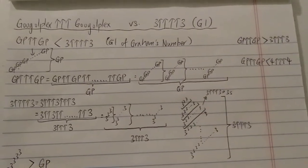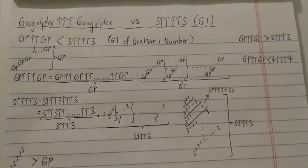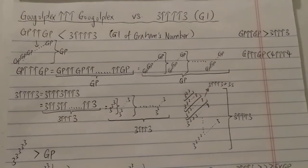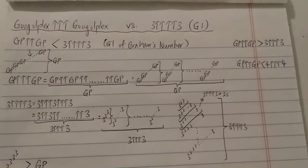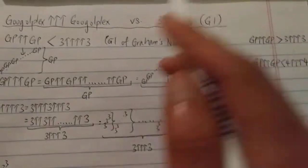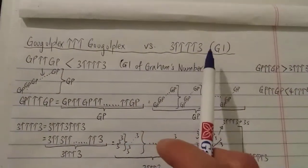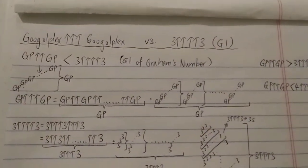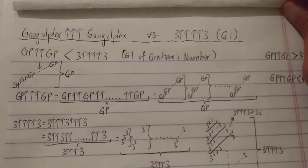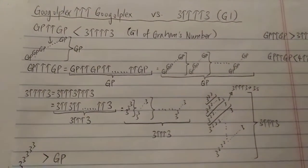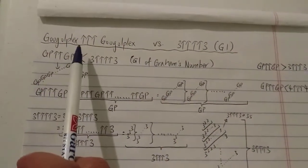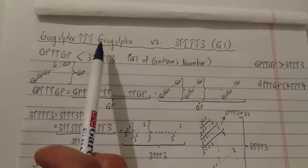Hi everyone. This is another big number video. I just realized there are still some people that vastly underestimate the size of Graham's number, or even G1, which is three four-arrows three — the first level of Graham's number. Today I'm going to try to explain it a bit more and compare it to Googleplex triple arrow Googleplex.